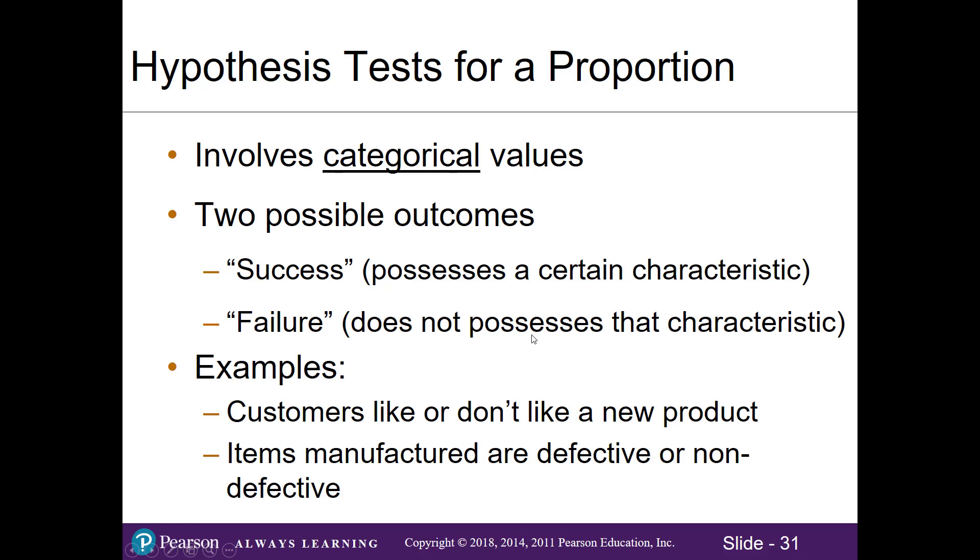For instance, if we think about our Airbnb data, I can do a hypothesis test for the proportion of listings that are apartments. The characteristic I'm interested in is whether or not it's an apartment. Other examples include customers that like or don't like a product, or items that are manufactured, whether or not they're defective or non-defective. If this sounds familiar, this is a binomial process because there's two possible outcomes.